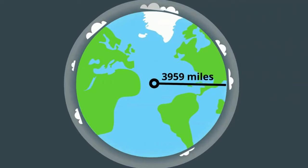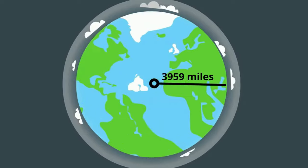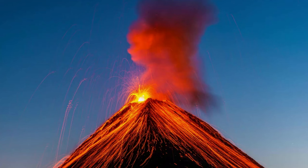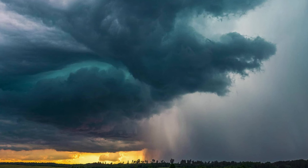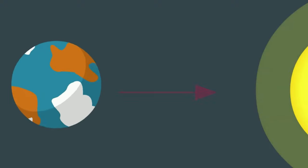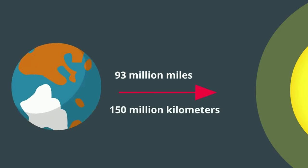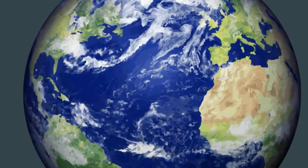Earth has a radius of roughly 3,959 miles. It has a solid surface composed of canyons, mountains, volcanoes, and tectonic plates that move. Its atmosphere is composed of 78% nitrogen, 21% oxygen, 1% argon, and less than 1% of other gases. Earth is 1 AU from the Sun, which is roughly 93 million miles or 150 million kilometers. Earth has a huge variety of life on it.